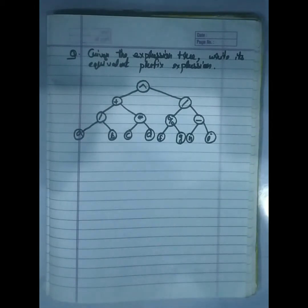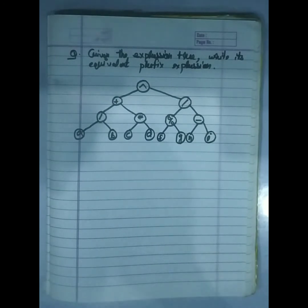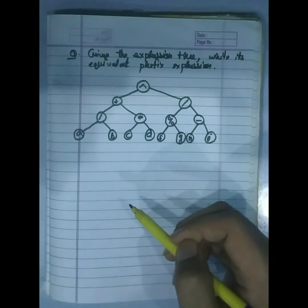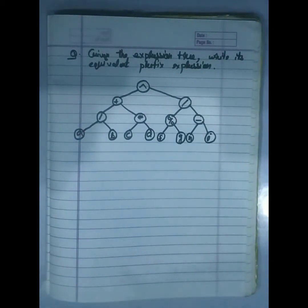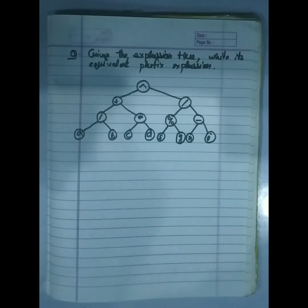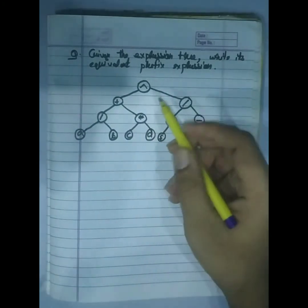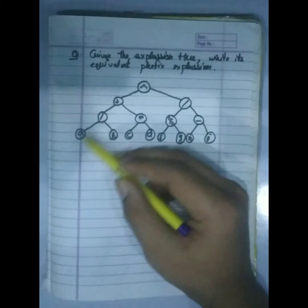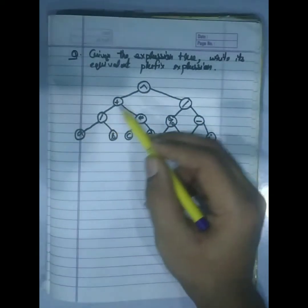To recap traversal orders: in-order traversal gives an infix expression; pre-order traversal gives a prefix expression; and post-order traversal — left, right, root — gives a postfix expression. So my trick is: start from the root and traverse using pre-order.